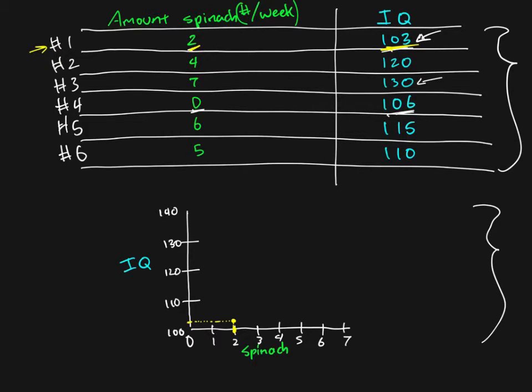And that point, each point on a scatterplot in this case, represents an individual participant. So this is participant number one and it represents both of the scores that they got. And this just turns out is a very nice way of being able to visualize the information so that you can look for patterns or relationships in it that might not be so obvious from just a table of numbers. So let's go ahead and fill in the rest of these. So participant number two has a score of four on spinach and 120 on IQ. So they're up here. So again, we find the place where those two scores intersect, which is right here.